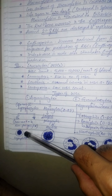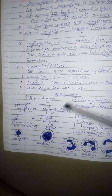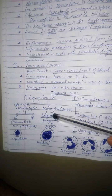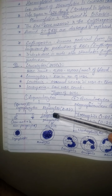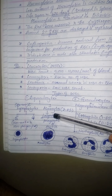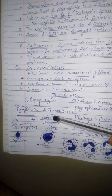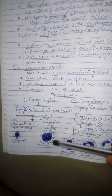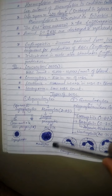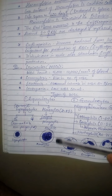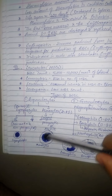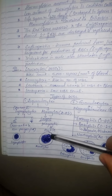Monocytes are the largest type of WBC cells. They are phagocytic and motile. Size-wise, they are the largest type of WBC, as shown in the diagram.